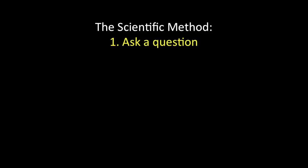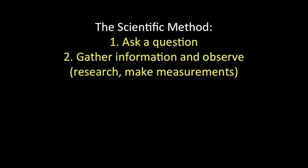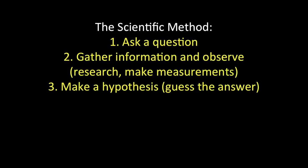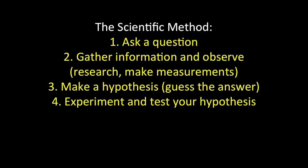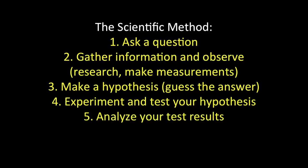There are a few ways to use what we call the scientific method, depending on what website, or even better, what book, you look at. There are a few different descriptions of the scientific method, but they generally look a lot like this. Step one: ask a question. Step two: gather information and observe — this usually means research and making measurements. Step three: make a hypothesis, which means you guess your answer to your question. Step four: experiment and test your hypothesis. Step five: analyze your test results. And step six: present a conclusion.